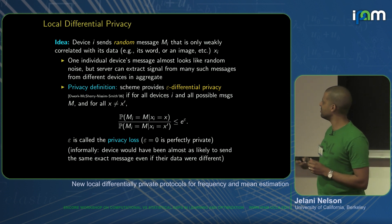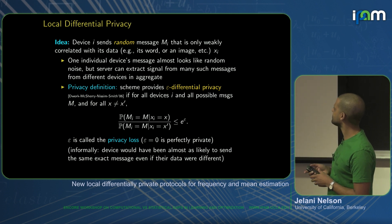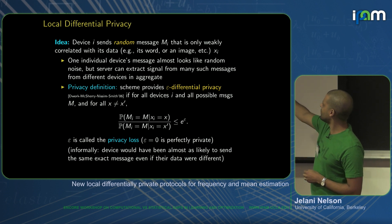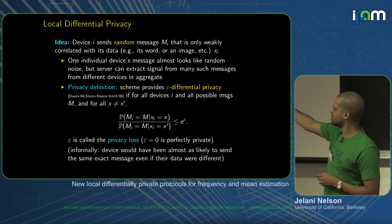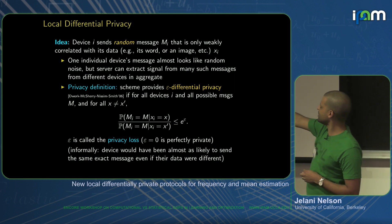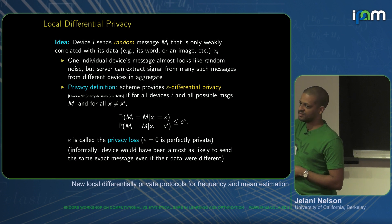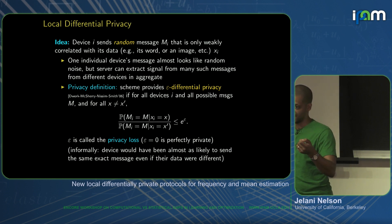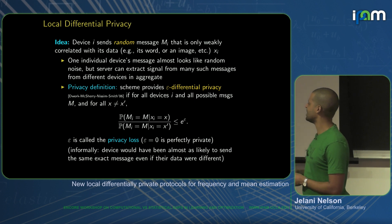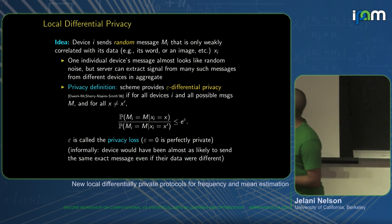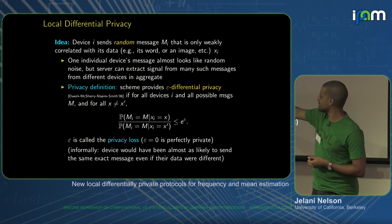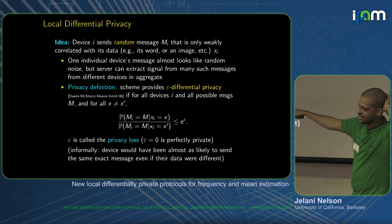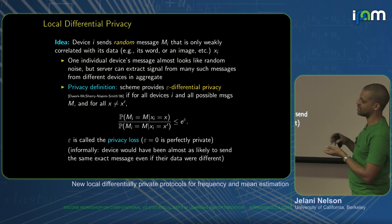The privacy definition we use is the standard one — differential privacy, introduced by Dwork, McSherry, Nissim, and Smith in 2006. For the local model, this means: for every device i, for all possible messages m, and for all different data elements x and x prime — say x is a picture of a cat or a picture of me — the probability that the i-th device sends message m given it has a picture of me, compared with the probability it sends the same message given it has a picture of a cat, should have a ratio bounded by e to the epsilon.